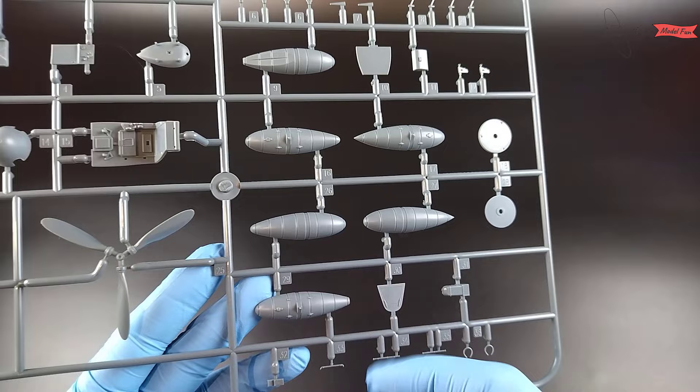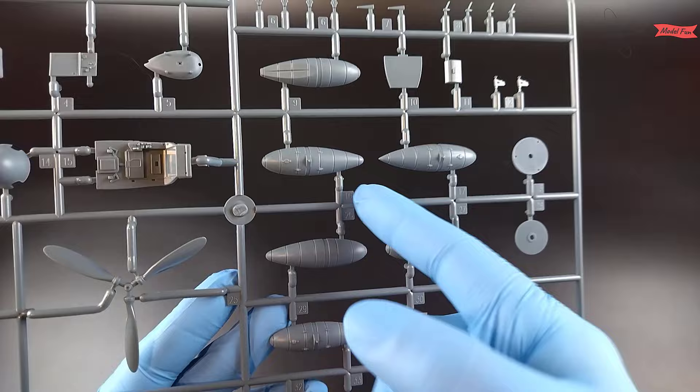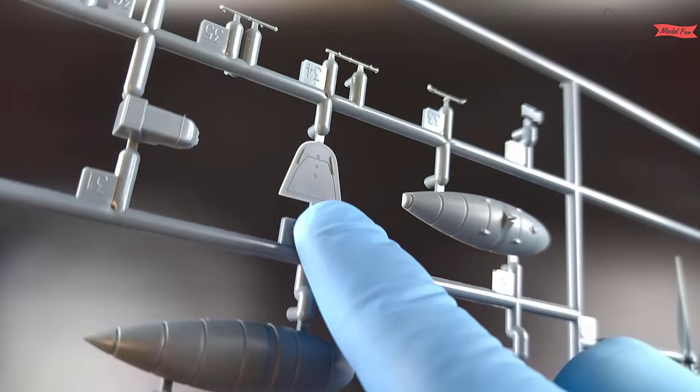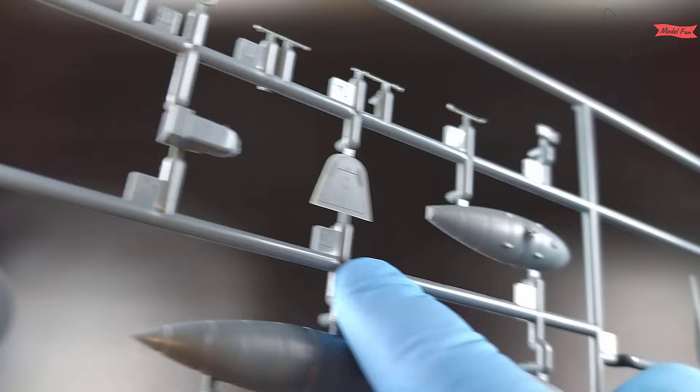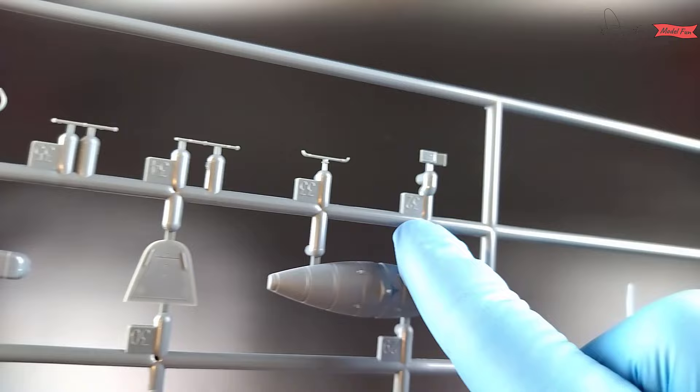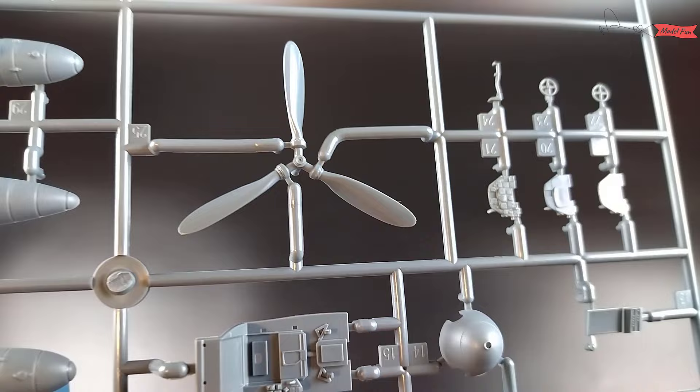There are three different drop tank shapes on sprue D, so we have options here, very nice. This part is problematic because the hatch shape is wrongly scraped, so this needs to be adjusted. This part goes behind the pilot's seat in the cockpit. We have two antennas here, so one is spare in case we lose it. And also there is a photo-etched part for that, I believe.